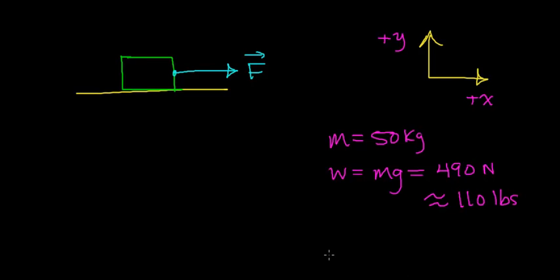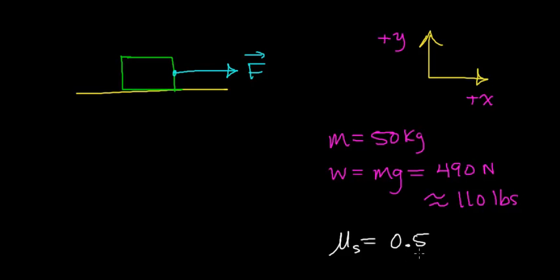The next thing you want to know is what the coefficient of static friction is. In this case, I'm assuming this is a wooden box along a wooden floor, and when I looked up the coefficient of static friction for wood on wood, I found that it was about 0.5. Remember, this is a unitless number — an experimentally determined or derived value.